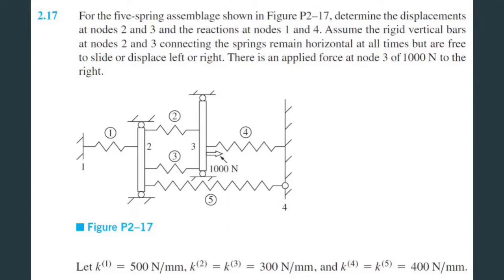Alright, let's do one more displacement direct stiffness method problem — problem 217. This one is a five-spring assemblage. We have to determine displacements at nodes 2 and 3 and the reaction forces at nodes 1 and 4. The bars are rigid and vertical at nodes 2 and 3, remaining horizontal but sliding left and right. There's also a force at node 3 of 1000 newtons to the right. It's the same as the other problems — just in this case we have more springs than nodes, but the process is the same.